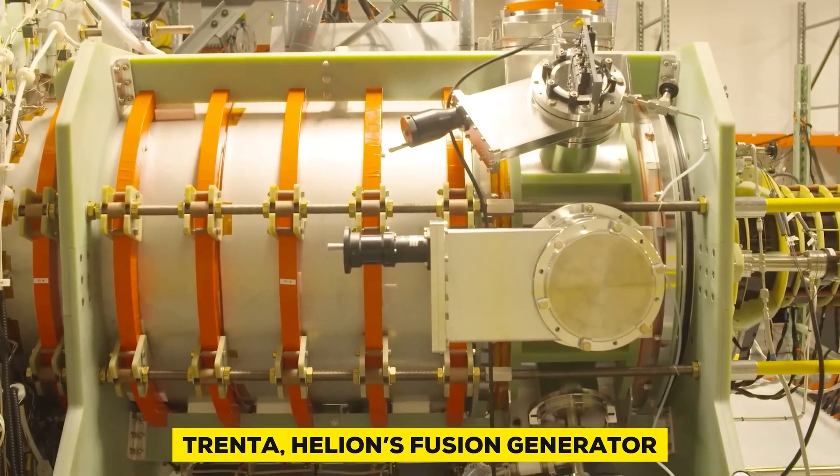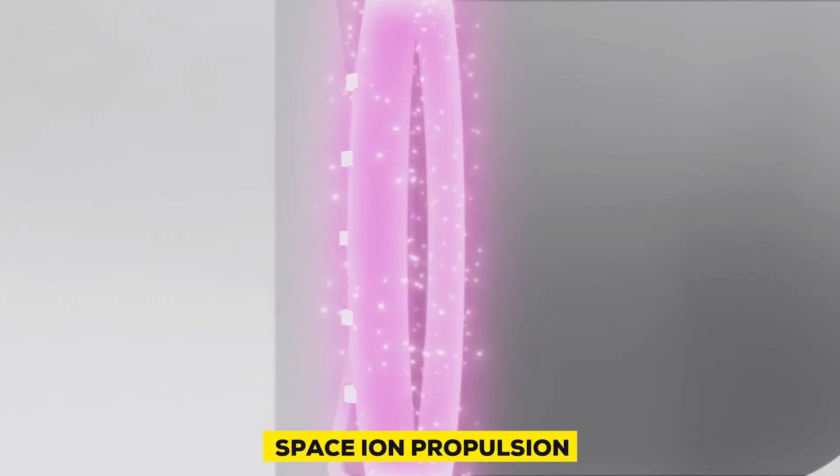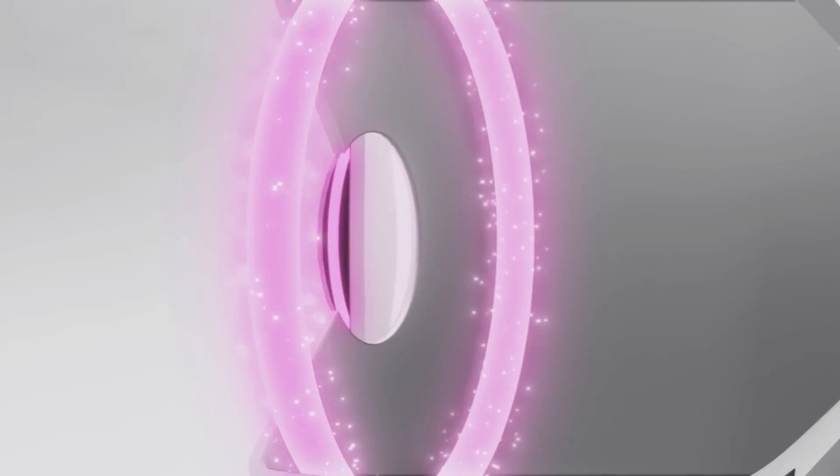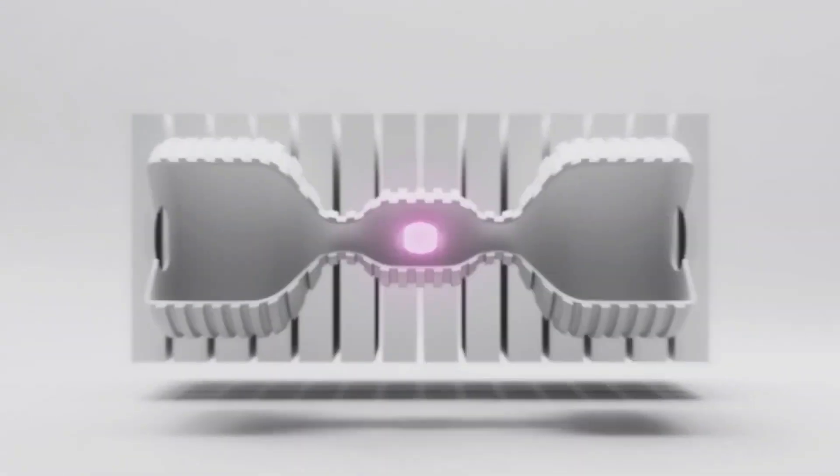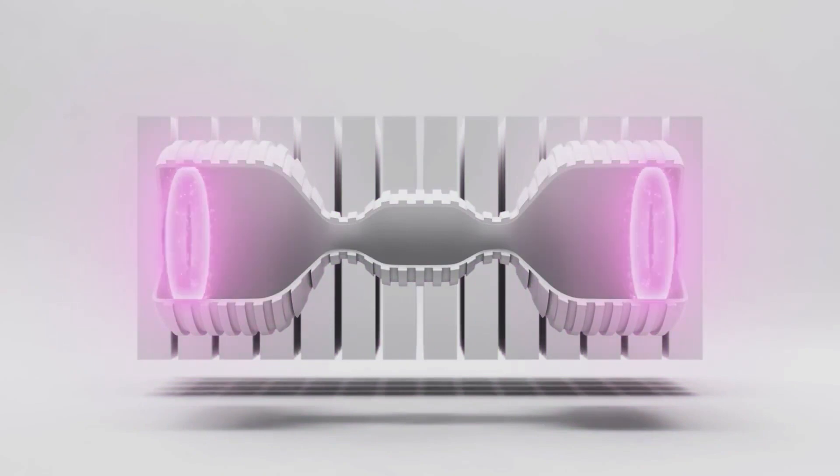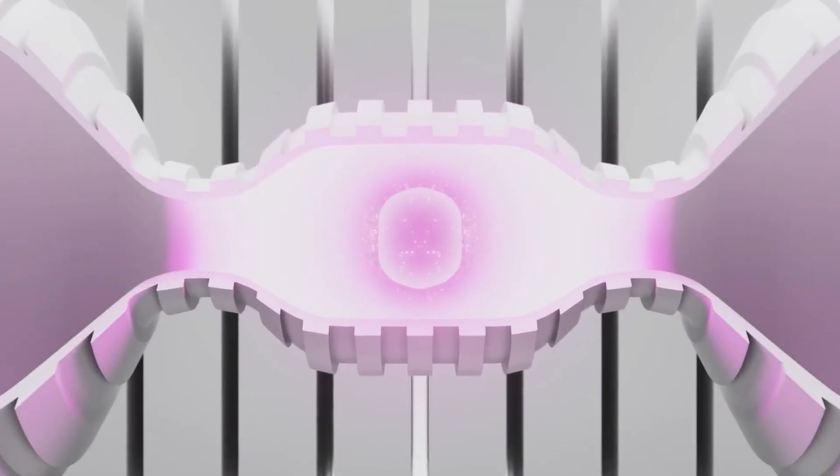Trenta, Helion's fusion generator, creates nuclear fusion using a brand new technique developed for space ion propulsion. It produces two mirror rings of plasma on either end of a reactor. Strong magnets operate to compress and crush the rings as they are fired sequentially toward each other in a split second, forcing them to smash into the center.